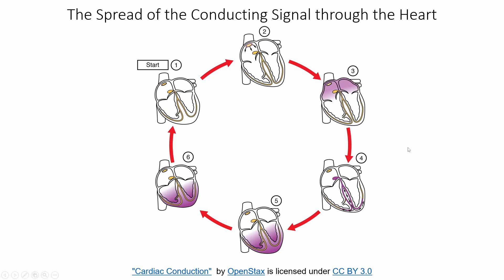At a basic level: first, no signal is being sent. Then the SA node sends a signal that travels throughout the atria, causing them to contract. The atria then relax as the signal is sent down to the Purkinje fibers, causing the ventricles to contract while the atria are relaxed. As that signal fades, everything relaxes and we go back to start. This cycle repeats: SA node fires, atria contract, AV node passes signal to ventricles, ventricles contract, then all chambers relax.